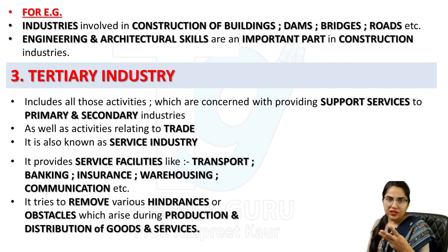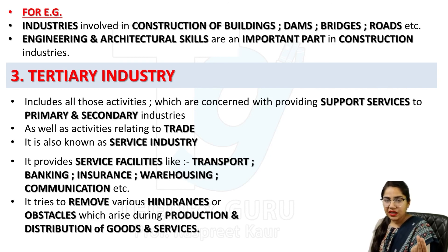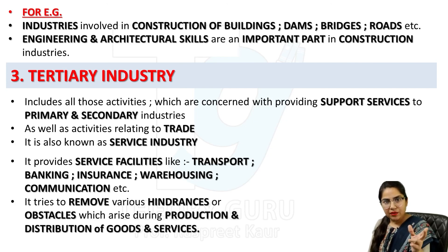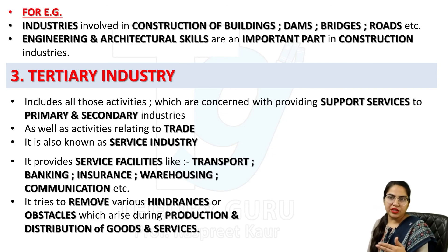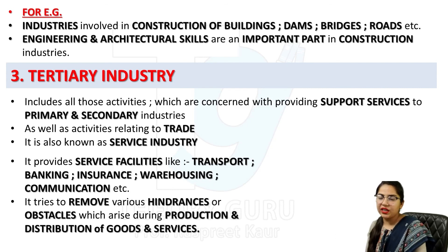So three types of industries: primary, secondary, and tertiary. Primary is where extraction happens through natural resources. Secondary uses primary's finished products as raw material and does further production. Tertiary industries provide support services to primary and secondary industries.